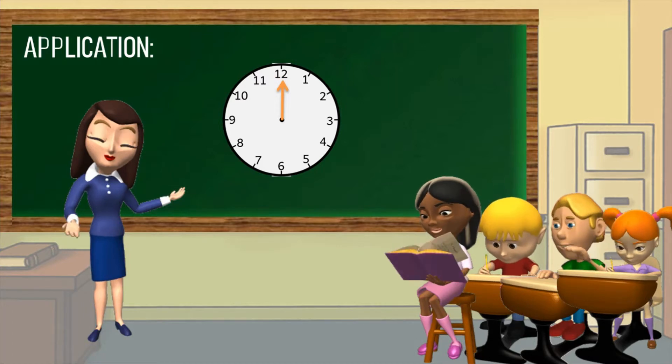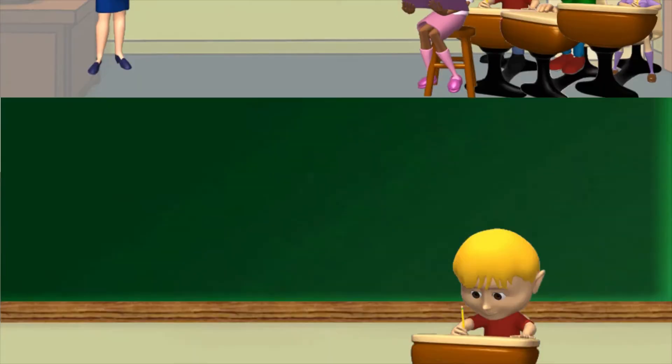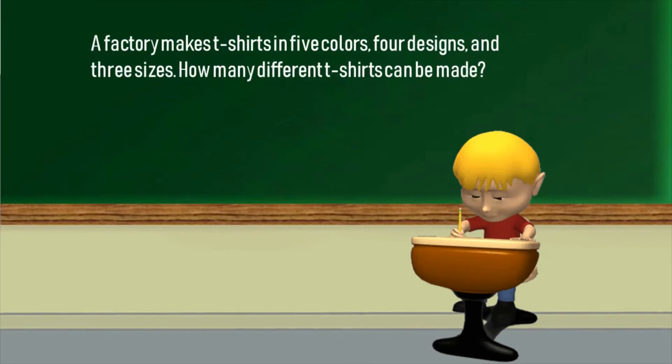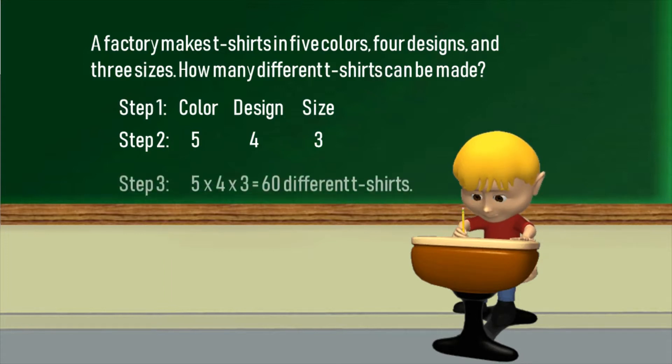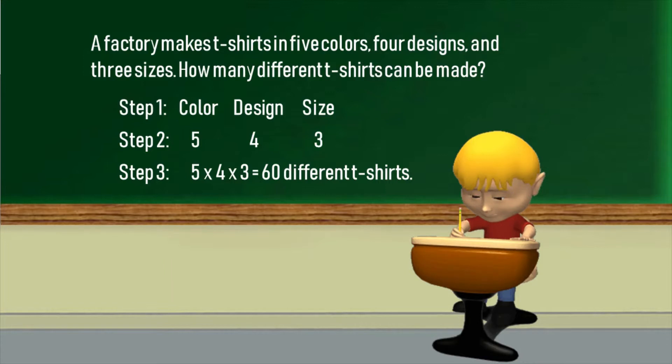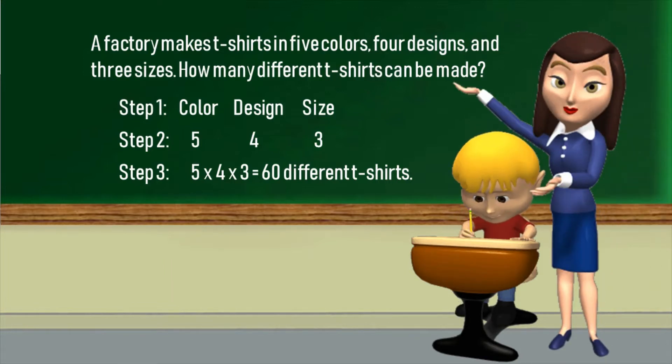Time is up. Present your work. Problem: A factory makes T-shirts in five colors, four designs, and three sizes. How many different T-shirts can be made? In step one, there are three events, namely the color, design, and the size. In step two, there are five options for the color, four in the design, and three for the size. In step three, multiplying them all will give 60 different T-shirts, teacher. Fantastic. Let's hear the next presenter.